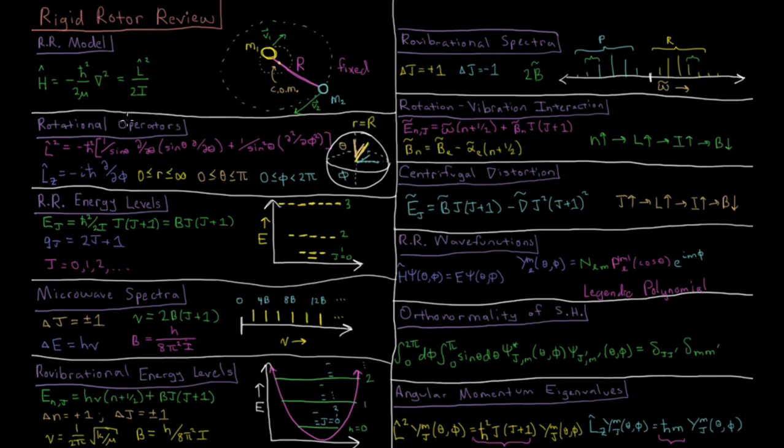The rotational operators which we're interested in for this system are the total angular momentum squared, L squared, which is the part of the Laplacian which deals only with the angular part when you transform to spherical polar coordinates. The r derivatives drop out because r is a constant. And you have the z component of angular momentum, the angular momentum around the z axis.